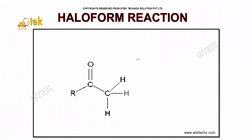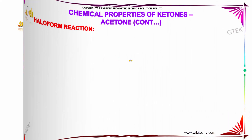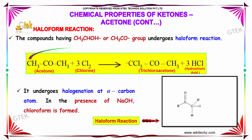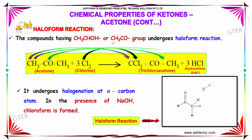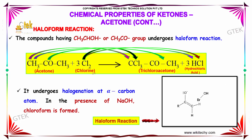Haloform reaction. Haloform reactions are generally carried out for compounds having a CH3CHOH or CH3CO group. For example, acetone contains a CH3CO group. When reacted with 3 moles of chlorine, we obtain trichloroacetone and 3 moles of hydrochloric acid. It undergoes halogenation at the alpha carbon atom. In the presence of NaOH, chloroform is formed.